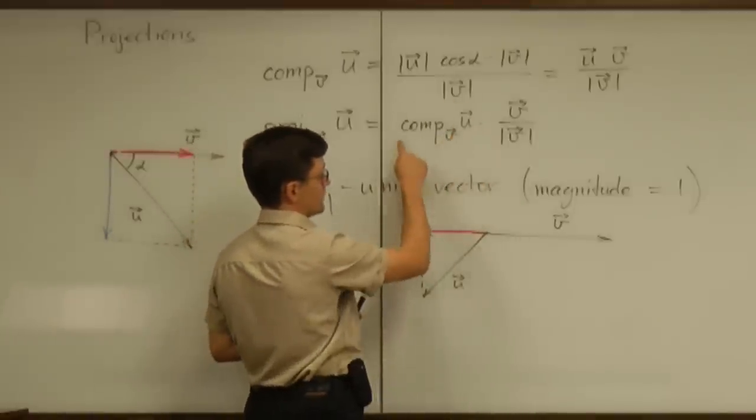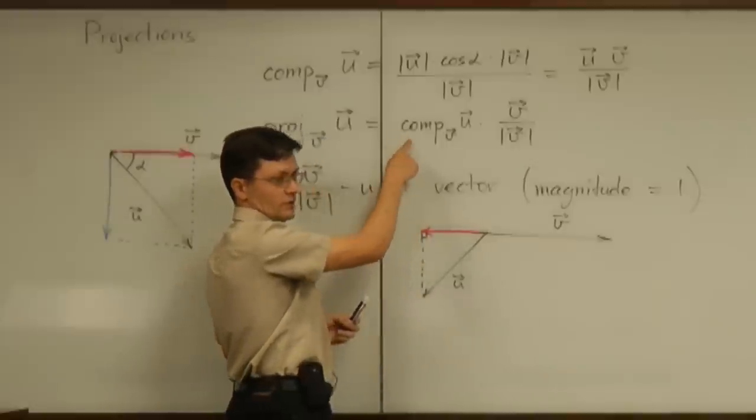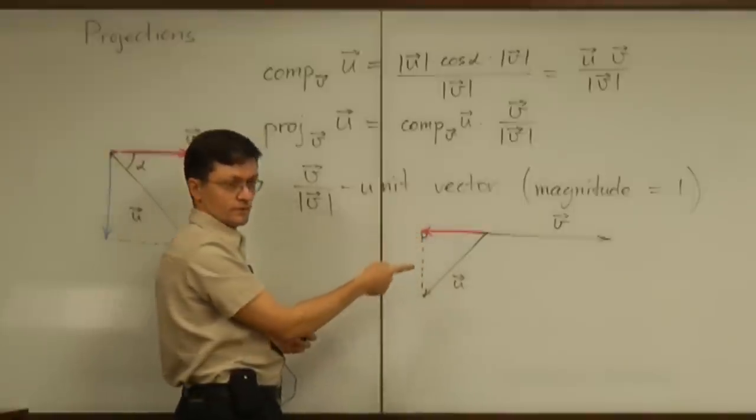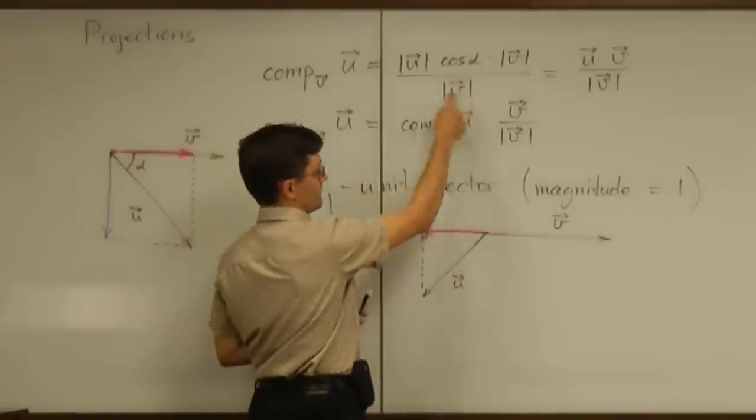And this value, positive or negative of the number, takes care automatically of the direction. If that value is negative, that will reverse the direction of v, and the resulting vector will be in the opposite direction.